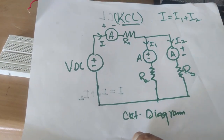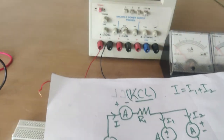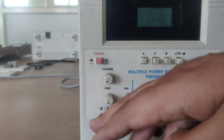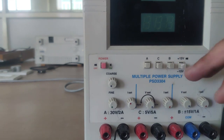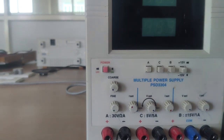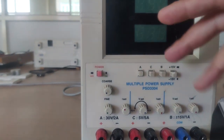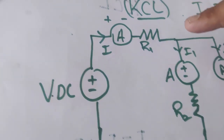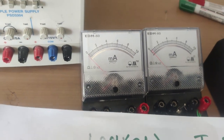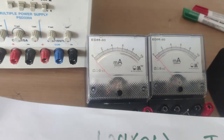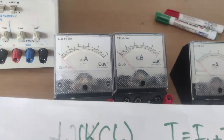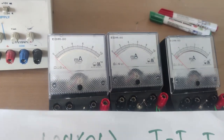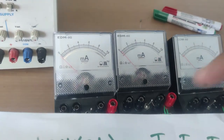You can see the DC source here — the red terminal is designated positive and black is designated negative. This is a variable supply; we can vary it from 0 to 30 volts. We also have an ammeter; the range depends on the current to be measured. Our current is in milliamperes, so I have set the milliampere range. We are performing DC measurements.